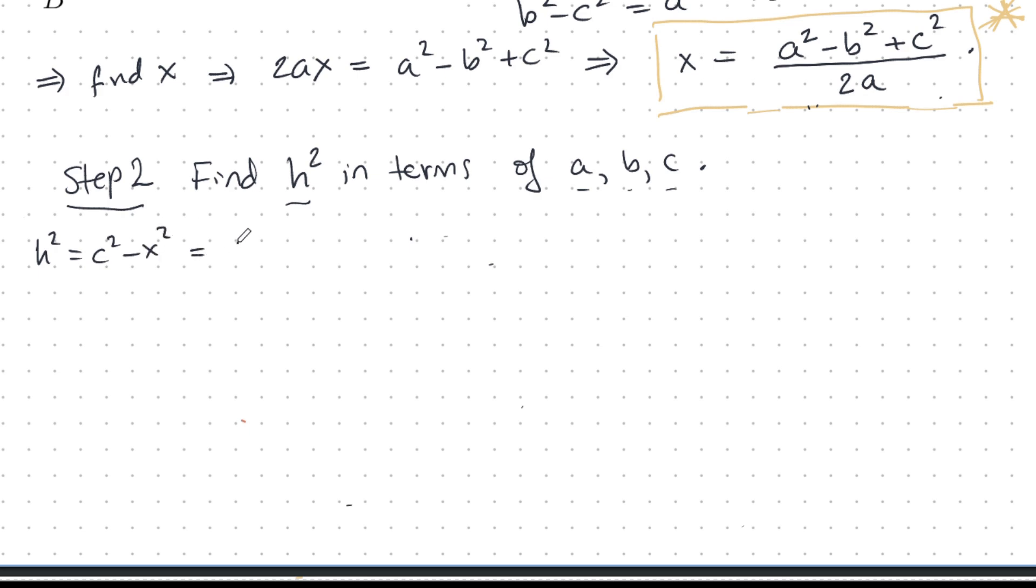H squared is C squared minus X squared. Well, this can be factored. C plus X times C minus X. Now, let's plug in this equation we got for X. We have C plus A squared minus B squared plus C squared over 2A, and the other factor, C minus the whole thing for X.